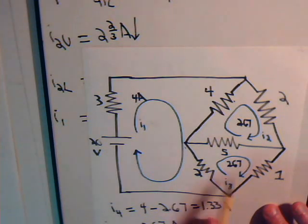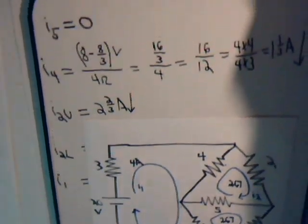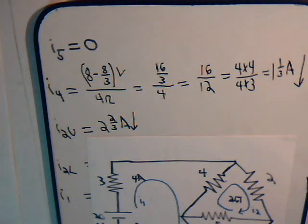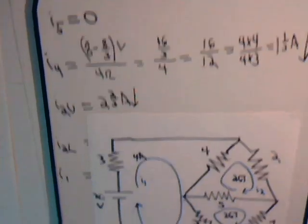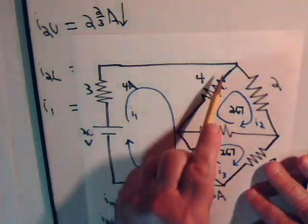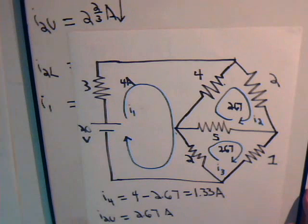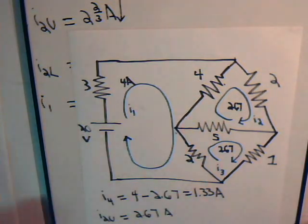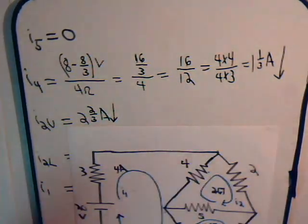We have 2.67 amps in one direction and 2.67 amps in the other direction through the 5 ohm resistor, so they cancel — and that agrees with what we obtained using nodal analysis. Through the 4 ohm resistor, we have 4 amps minus 2.67 amps: that's mesh current I1 minus mesh current I2, giving 1.33 amps going downward. That also agrees with the nodal analysis result of 1.33 amps going down.